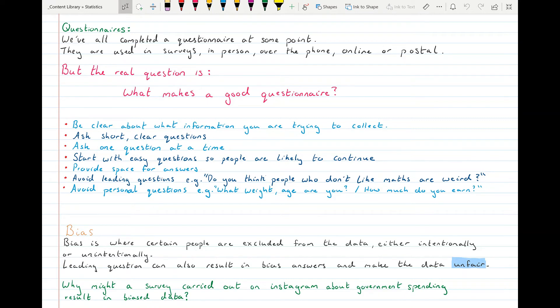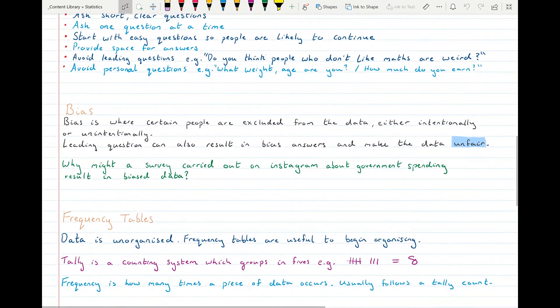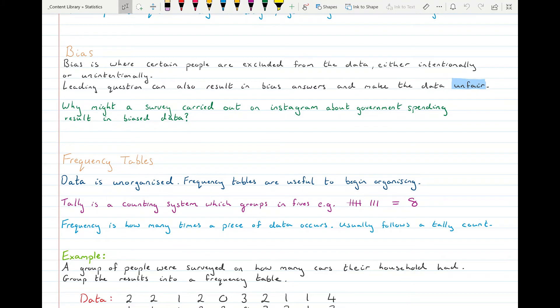Bias is a very important factor when it comes to collecting statistical data. Bias is where a certain group of people are excluded from the data, either intentionally or unintentionally. You might actually know that you're excluding them, or it might just be that there's a quirk with the data system that you're using. For example, you might be carrying out a survey on Instagram. Why might that be a biased survey? Because a lot of people that are older probably don't have Instagram. So you're getting just a subset of the population, probably getting young people, people that are into social media. You're actually excluding an awful lot of people that way. Leading questions can also result in biased answers that make the data unfair. So bias is something that you really want to watch out for.